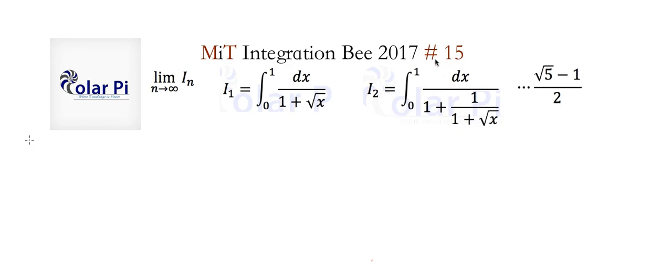Welcome. So problem 15 and definitely my favorite of the 2017 bunch, it's really cool. So i1 here is this integral and i2 is this integral where the integrand is appearing like a continued fraction and we proceed in this manner. The task is to show that the limit as n goes to infinity of i sub n is equal to this number here.